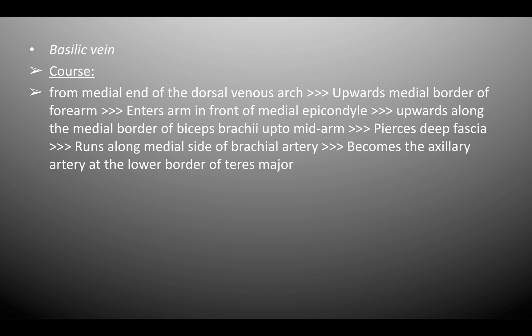The basilic vein commences from the medial end of the dorsal venous arch and runs upwards along the medial border of the forearm. It enters the arm in front of the medial epicondyle, then runs upwards along the medial border of biceps brachii up to the mid arm, where it pierces the deep fascia. It then runs along the medial side of the brachial artery and becomes the axillary vein at the lower border of teres major.